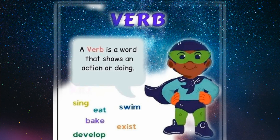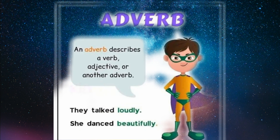ہر وہ چیز جو noun یا pronoun کی qualities کو ظاہر کرے اس کو adjective کہتے ہیں۔ Verb — a verb is a word that shows an action or doing. Verb وہ لفظ ہوتا ہے جو کسی کام کو show کرے یا کسی کام کی کرنی کو show کرے تو اس کو verb کہتے ہیں۔ For example: sink, eating, swimming.